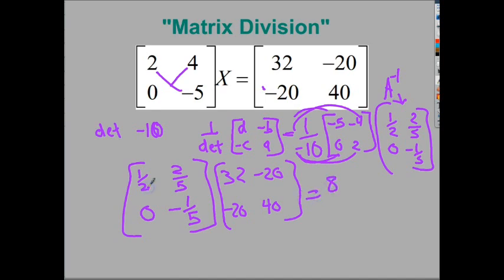And then I'll do 1 half times negative 20, and that would give me negative 10. And then I'll do 2 fifths times 40, which is 16, and that would give me a 6. So, negative 10 plus 16 gives you 6.